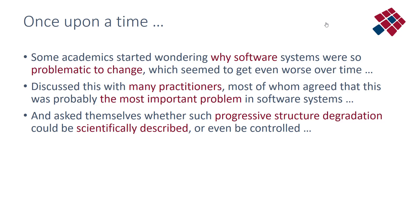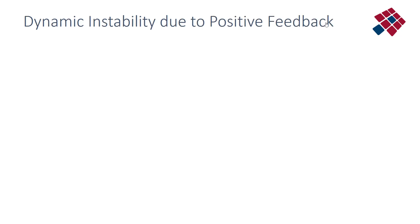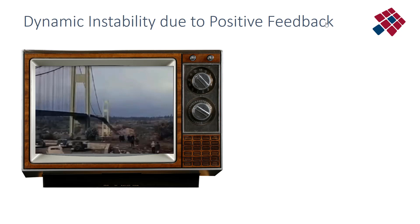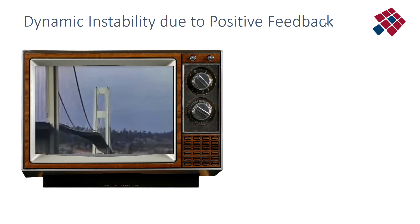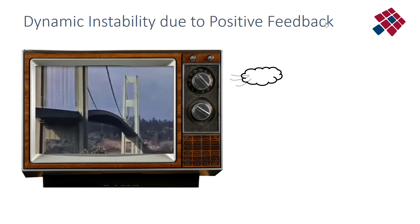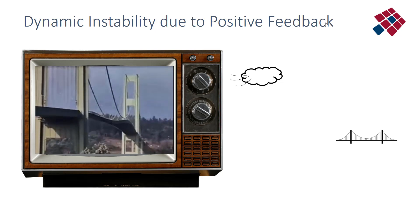There is a concept in engineering describing something which gets worse over time — which is progressive — and that concept is a dynamic instability due to positive feedback. Probably the best-known example of a dynamic instability due to positive feedback is the collapse of the Tacoma Narrows Bridge in the 1940s, caused by a positive feedback mechanism between the wind and the motion or deflection energy of the bridge.